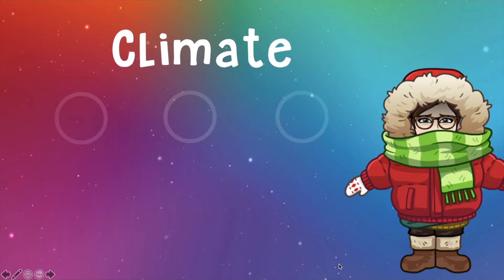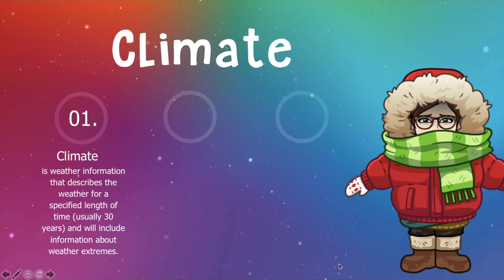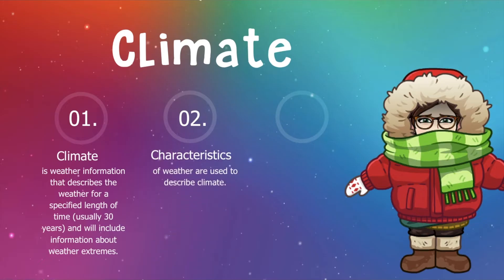First off, we're going to talk about climate. Climate is weather information that describes the weather for a specified length of time, usually 30 years, and will include information about weather extremes. Characteristics of weather are used to describe climate. So when you're describing weather or climate, you're going to use words such as temperature, precipitation, humidity, and air pressure. Those words describe both weather and climate.